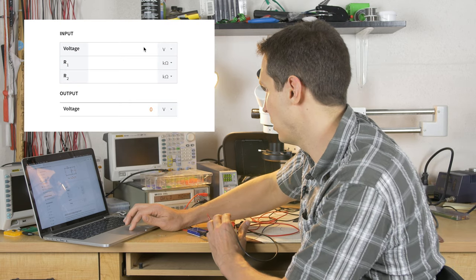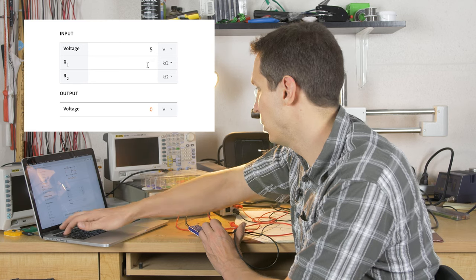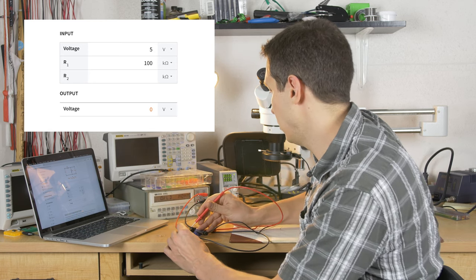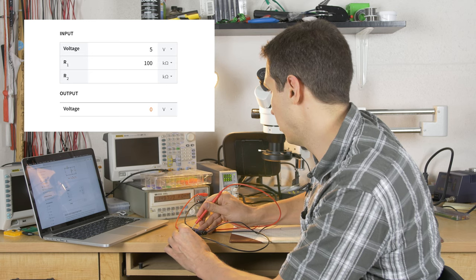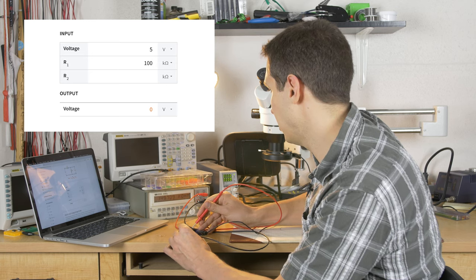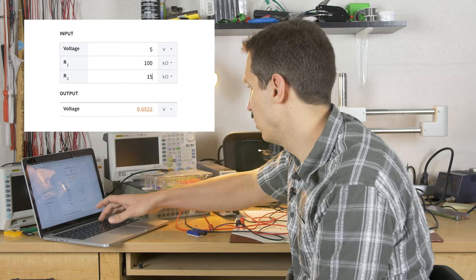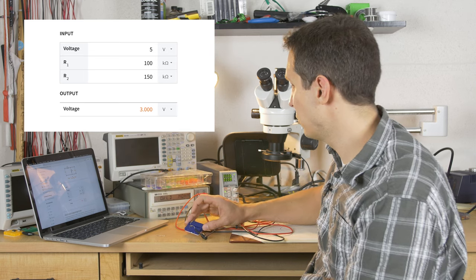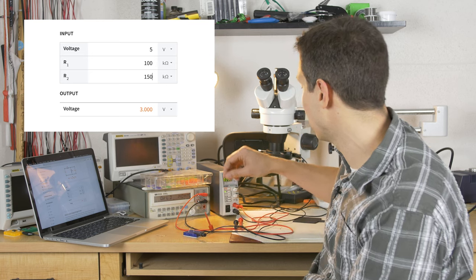I'm going to go into here, I'm going to put 5 volts because I know that's what I'm going to set it to, and R1 is going to be 100 kilohms. And then R2 is 149.7, basically 150 kilohms. With that, we should be seeing 2 volts over R1 and 3 volts over R2 as soon as we hook this up.